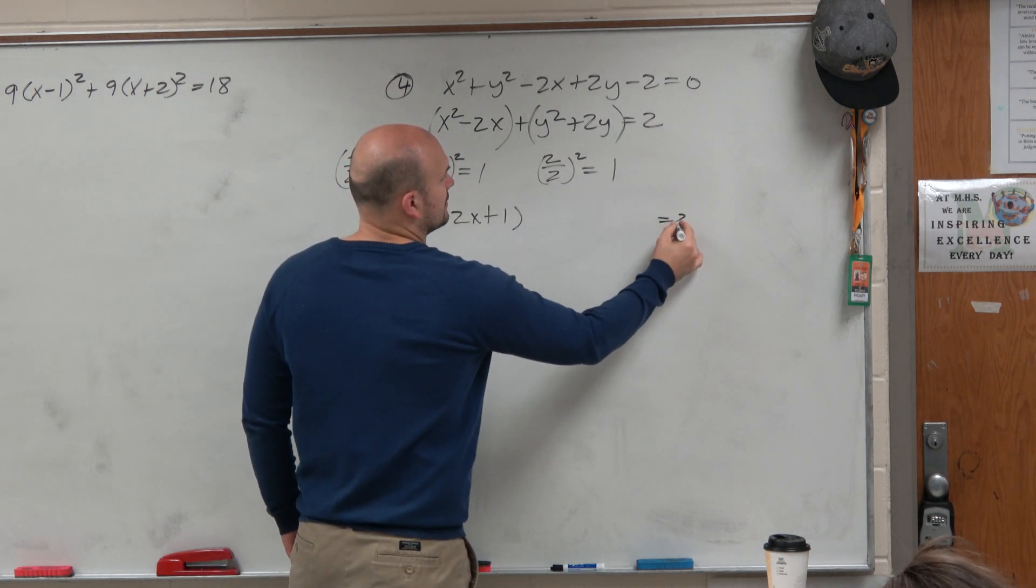So I'm going to add a 1 into both of those parentheses. So I have x squared minus 2x plus 1. Now again, you just can't add a 1, right? If you add a 1 to the left side, then you're going to have to add a 1 to the other side.